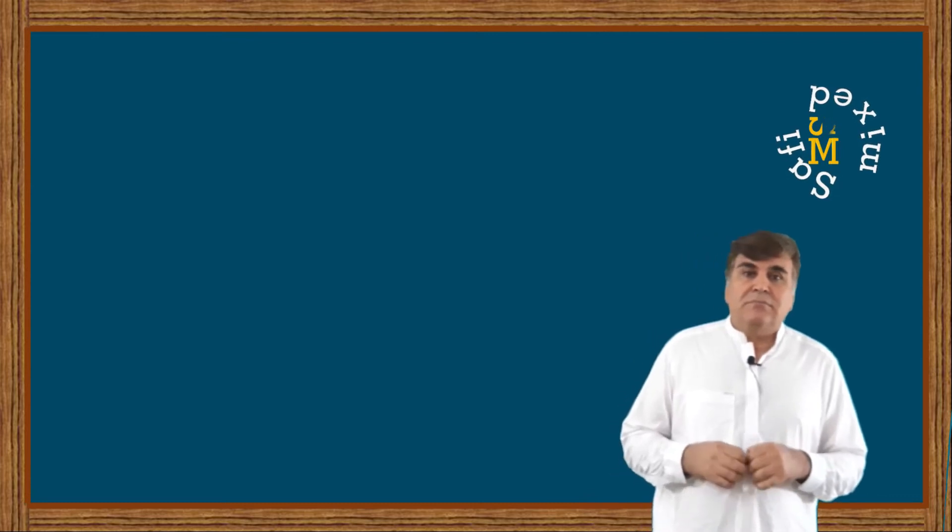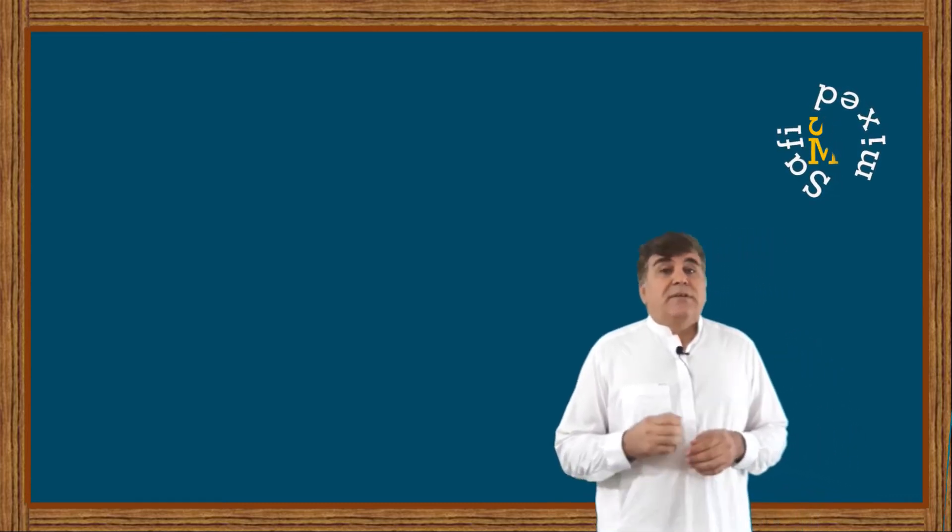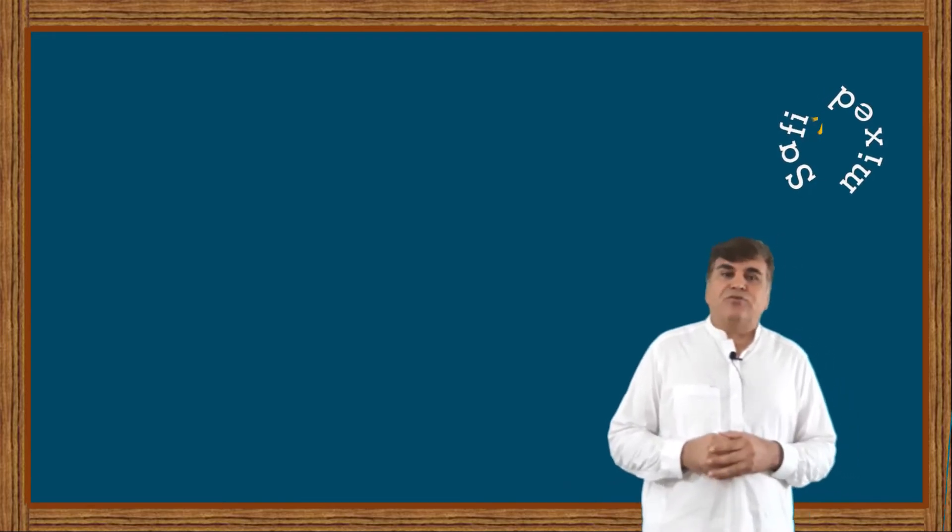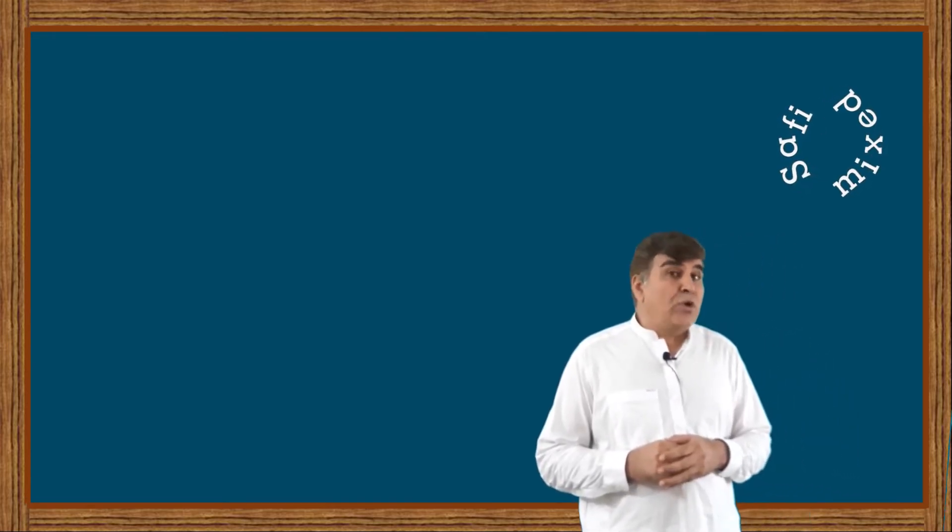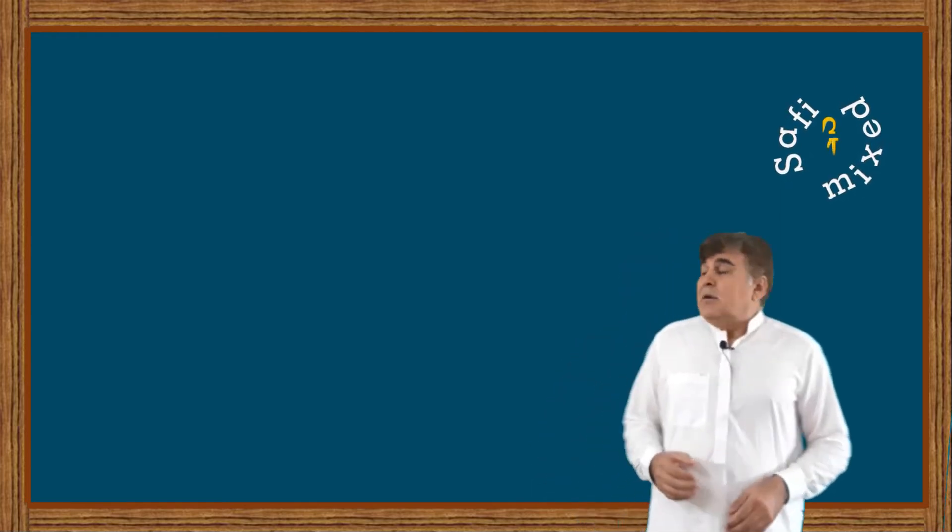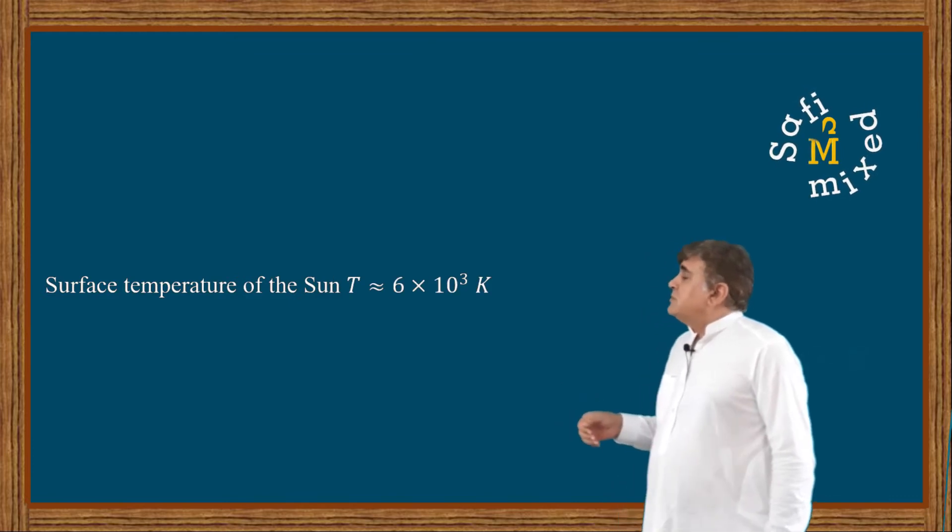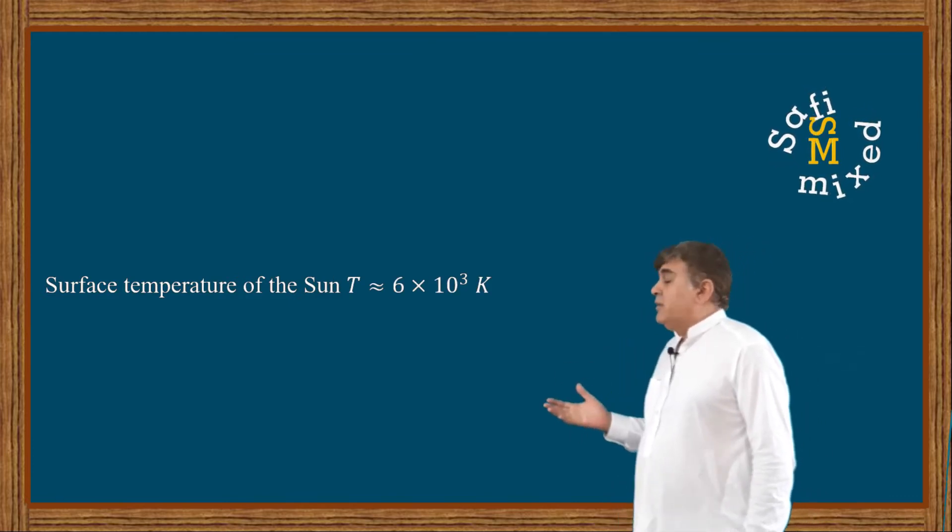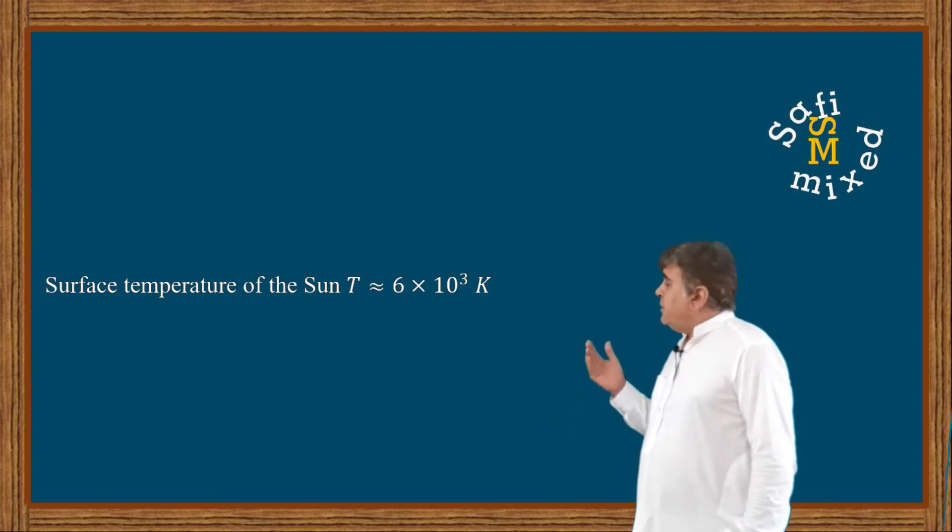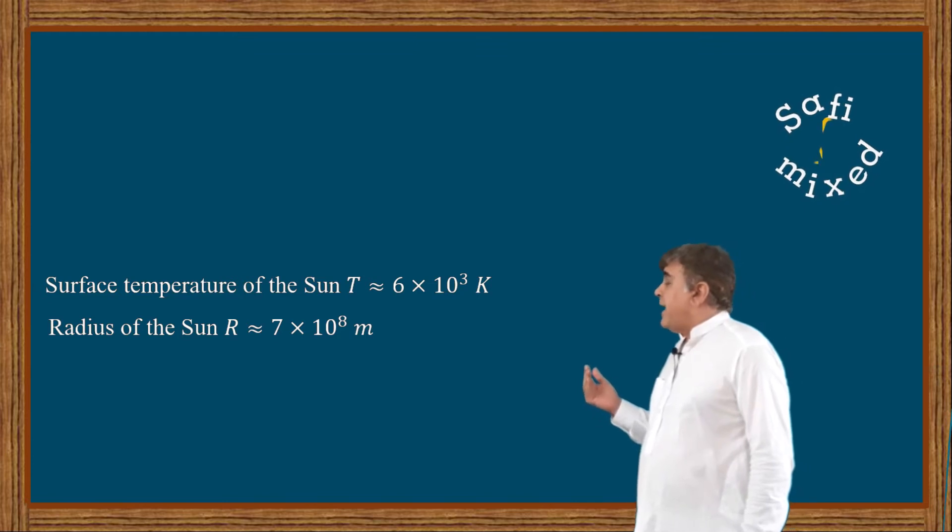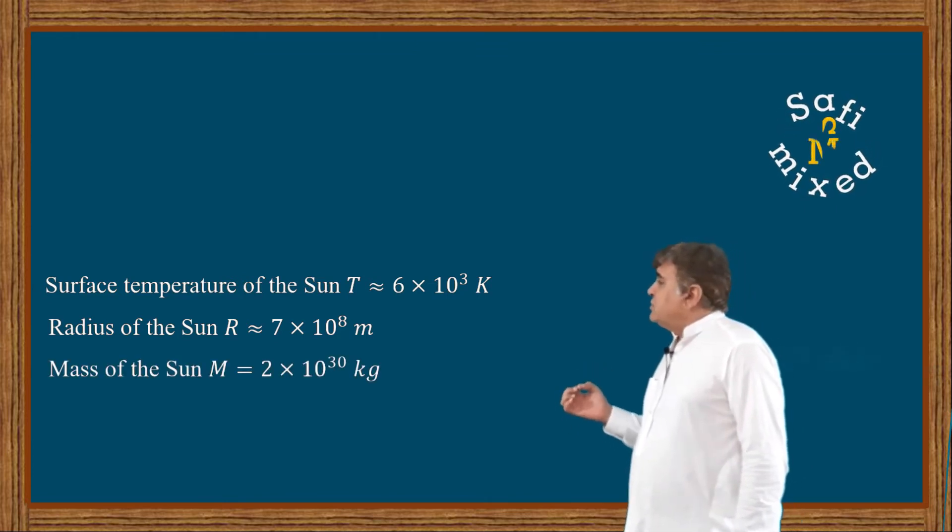We can prove this claim mathematically. To this end, let us first write the data we know about the Sun. The Sun's surface temperature is around 6 × 10³ K. Radius of the Sun is about 7 × 10⁸ m. Mass of the Sun is 2 × 10³⁰ kg.